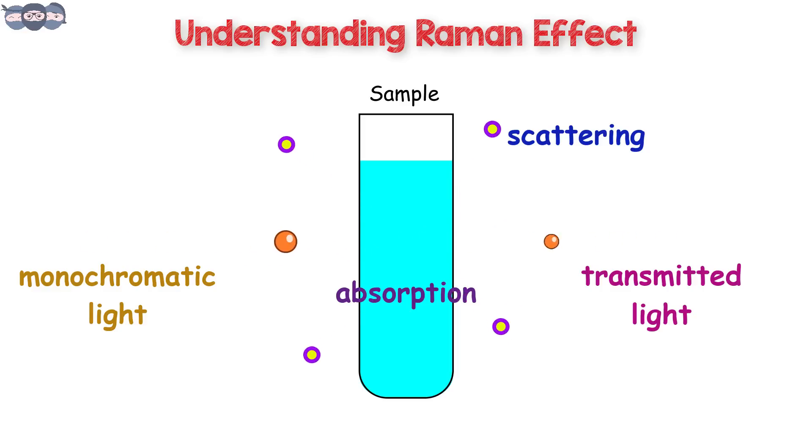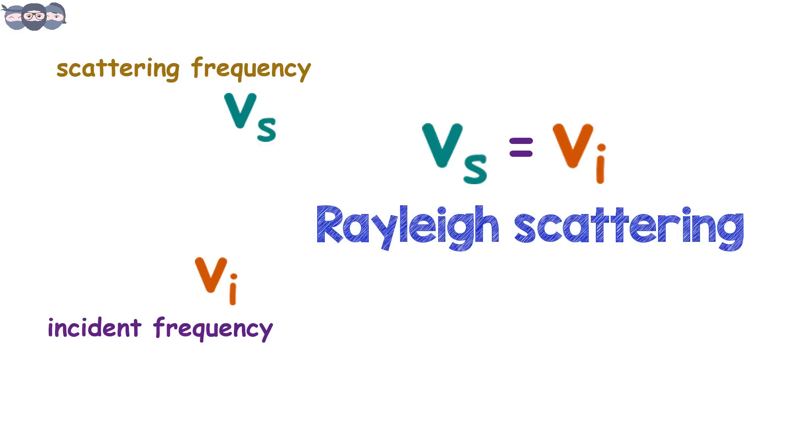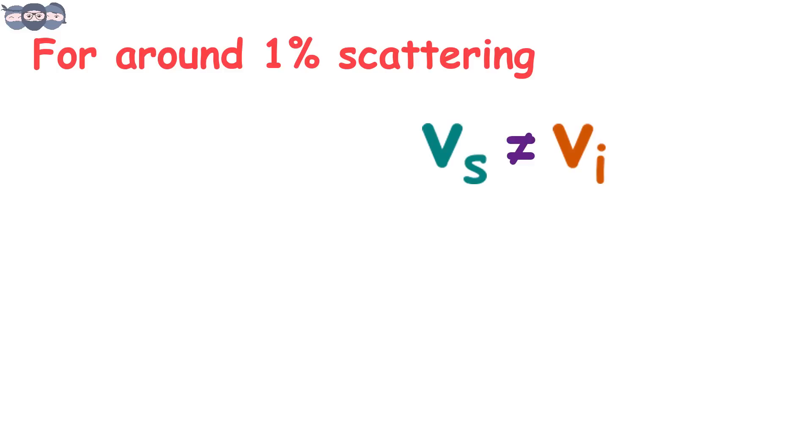One can observe the scattering at right angle to the incident beam. The incident light has a particular frequency. If the scattered light has the frequency same as the incident light, then the scattering is called Rayleigh scattering. However, it has been observed that about 1% of the total scattered intensity occurs at frequencies different from the incident frequency. This is called Raman scattering.